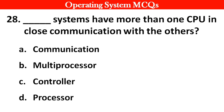Next question: Dash systems have more than one CPU in close communication with each other. Options: A. Communications. B. Multi-processor. C. Controllers. D. Processor. Right answer is option B: Multi-processor.